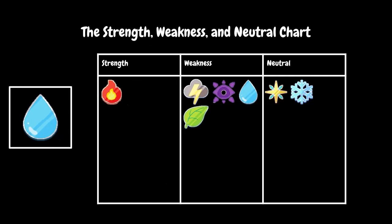This is the Water element. It's strong against Fire, which is good. But it's weak against so many things: Storm, Shadow, itself, and Plant. And it's neutral against Ice and Astral.